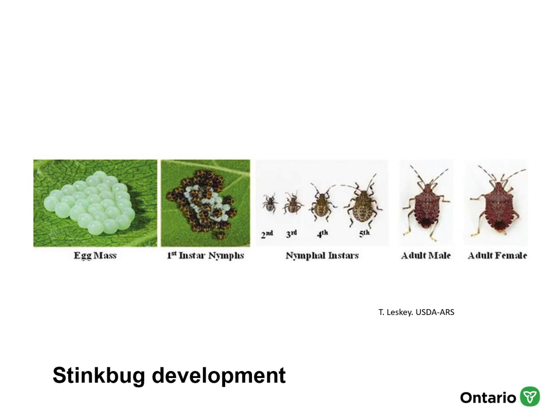Brown marmorated stink bug is a great example of gradual metamorphosis. The female lays multiple egg masses, each with roughly 20 to 25 eggs. The first instar nymphs hang on the egg mass, feed on remaining egg contents, then disperse and gradually develop. They look very similar to the adult — smaller and shield-shaped — and in the fifth instar nymph, you can see little wing buds forming before the adult emerges.